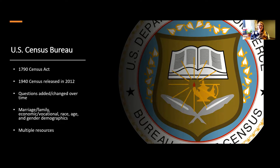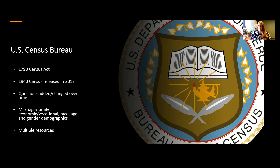Most of the information presented on the census is about families — the head of household and everyone in the house underneath them. This is going to help you tremendously with figuring out who goes where on your family tree. There is also economic and vocational information, as well as race, age, gender demographics, and things like that. Because census records are so vital to genealogy research, most of the sources I'm going to mention today will have access to census records.